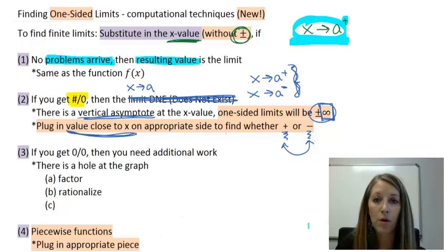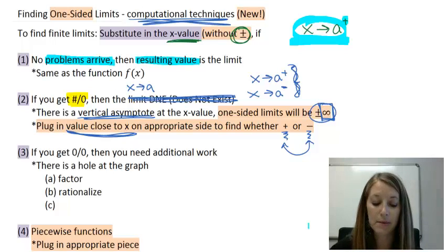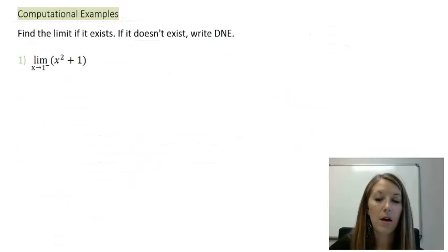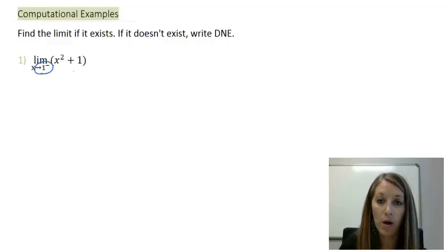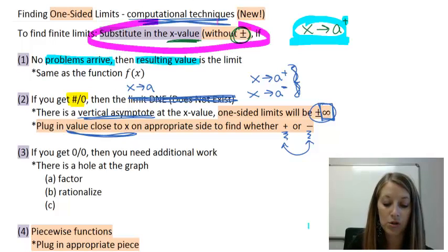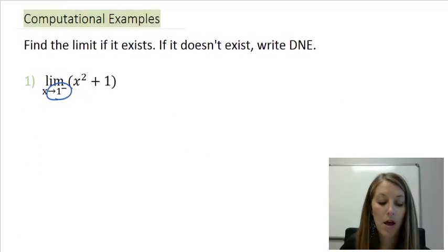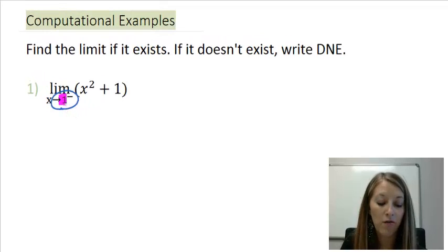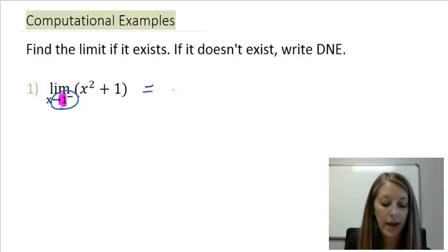So now that we know the formal process or the formal computational techniques, let's see some examples of one-sided limits. My first example here is the limit as x is approaching 1 to the negative, meaning from the left-hand side, of x squared plus 1. If we go back and review our techniques, we see that the very first thing that we should do is substitute in the x value, ignoring the positive and negative. So we're going to substitute in our x value of 1 here, ignoring that we really actually care about the left-hand side.